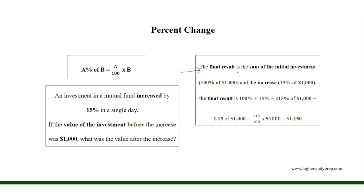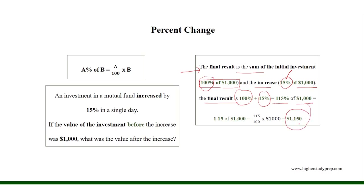The final result is the sum of the initial investment — 100% of $1,000 — and the increase — 15% of $1,000. That is, the final result is 100% plus 15%, which is 115% of $1,000, resulting in $1,150. Here, 115% equals 115 over 100, which is the equivalent decimal 1.15, therefore 1.15 times $1,000 equals $1,150.